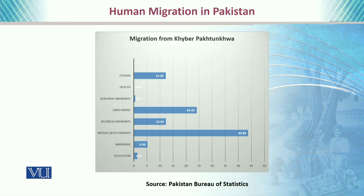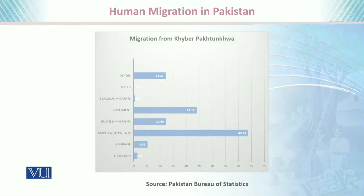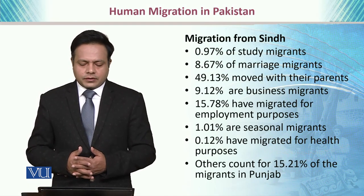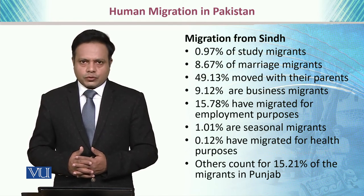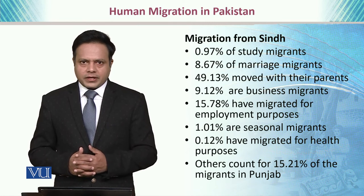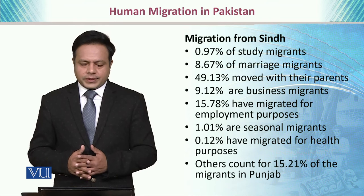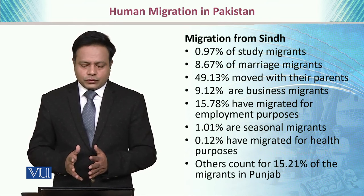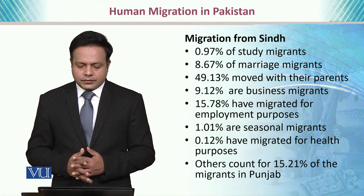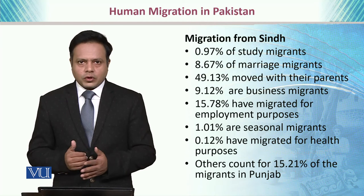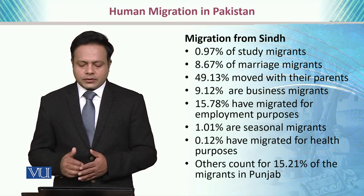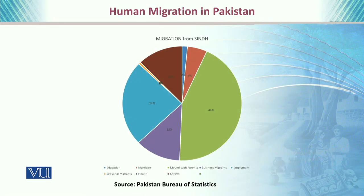The majority is moving with their parents, and then for employment, health, marriage, and education purposes. If we look at migration trends in Sindh, less than 1% are educational migrants and 8% are marriage migrants. Almost 50% move with their parents as permanent settlers to other provinces, whereas 9% are business migrants and 15% have migrated for employment purposes. The rest of the migrants count around 15%. A great majority, just like other provinces, is migrating as permanent settlers with their parents.